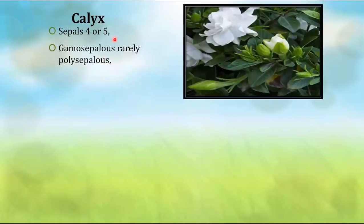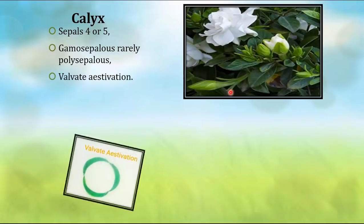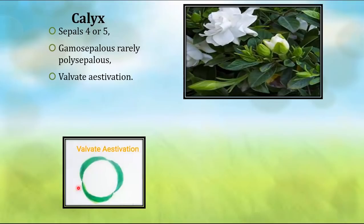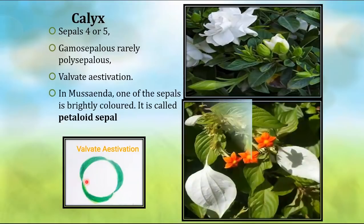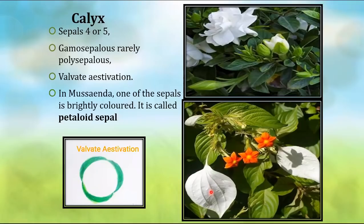The calyx consists of sepals — four or five, green in color, and gamosepalous, though rarely polysepalous. Aestivation is valvate type — the sepals are just touching each other. In the Mussaenda plant, one sepal is bright in color and is called a petaloid sepal — it is a sepal but looks like a petal with a bright color.